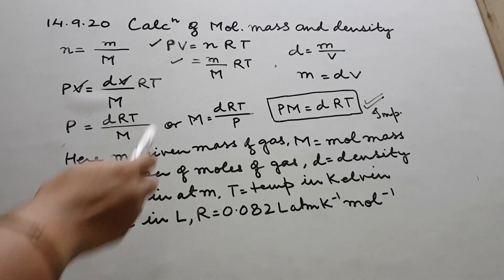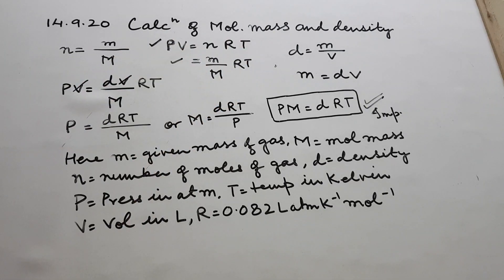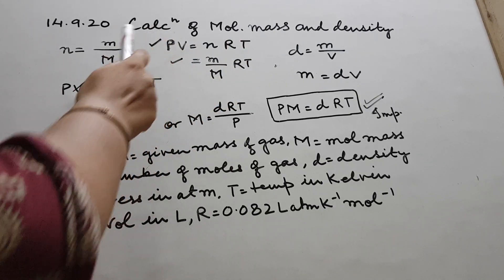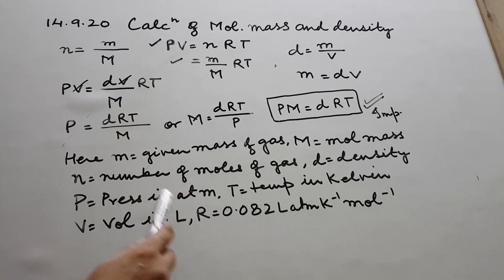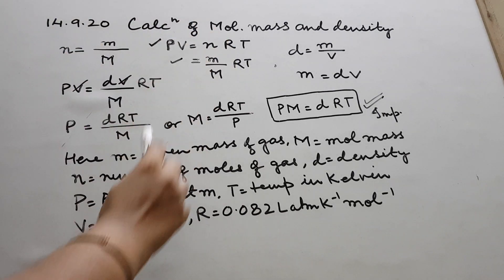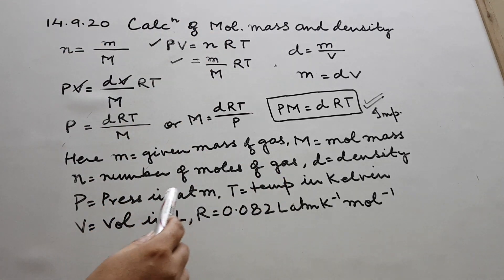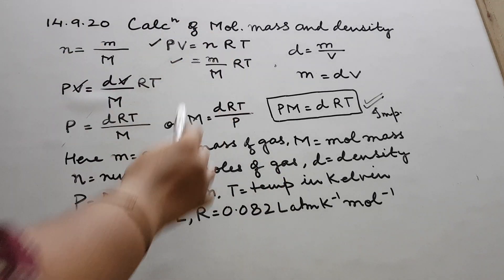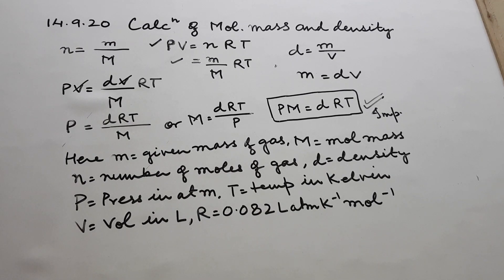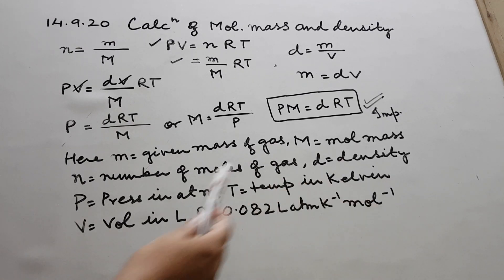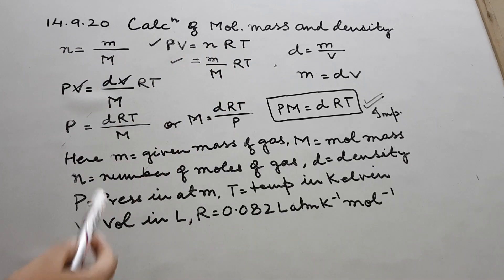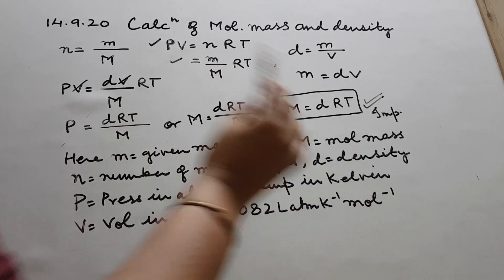Our ideal gas equation is PV = nRT, where P is pressure in atmospheres, V is volume in litres, n is the number of moles of gas, R is the gas constant 0.082 litre atmosphere per Kelvin per mole, and T is temperature always in Kelvin.